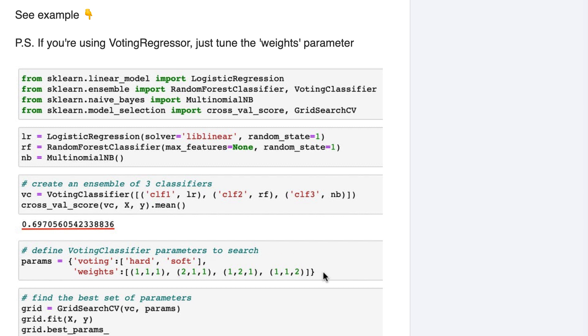The weights parameter controls how much influence each model exerts on the ensemble. By default, each of the three models is given equal weight, which is represented by the tuple of three ones. However, you can try weighting certain models more than others to give them more voting power when determining the predicted class labels or predicted probabilities.